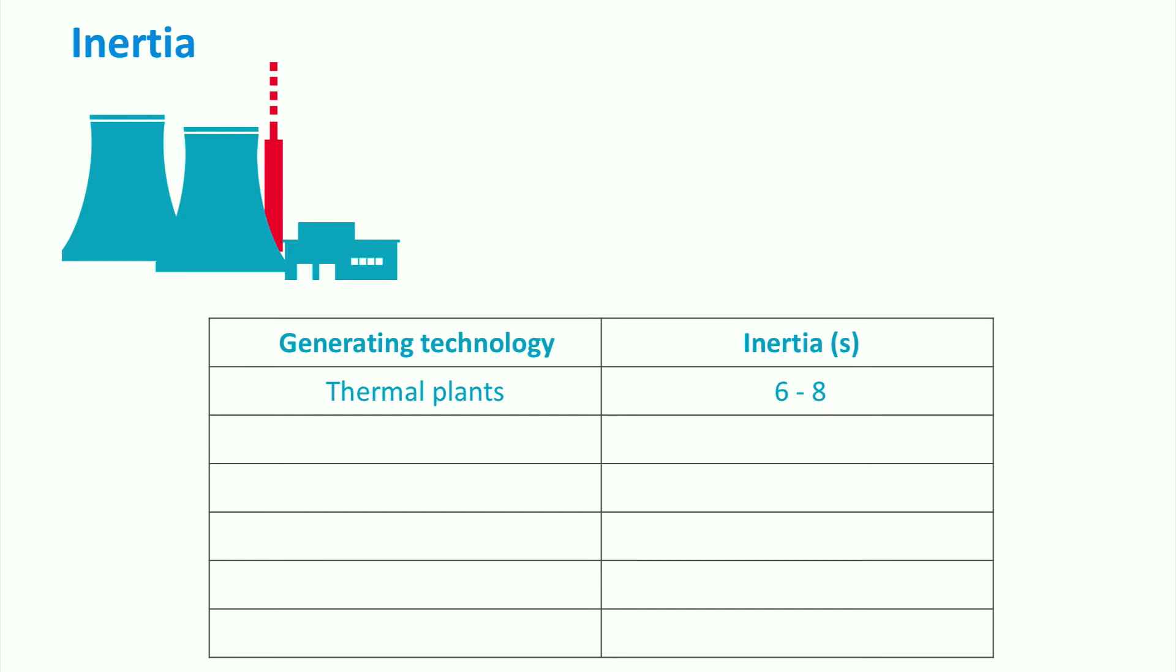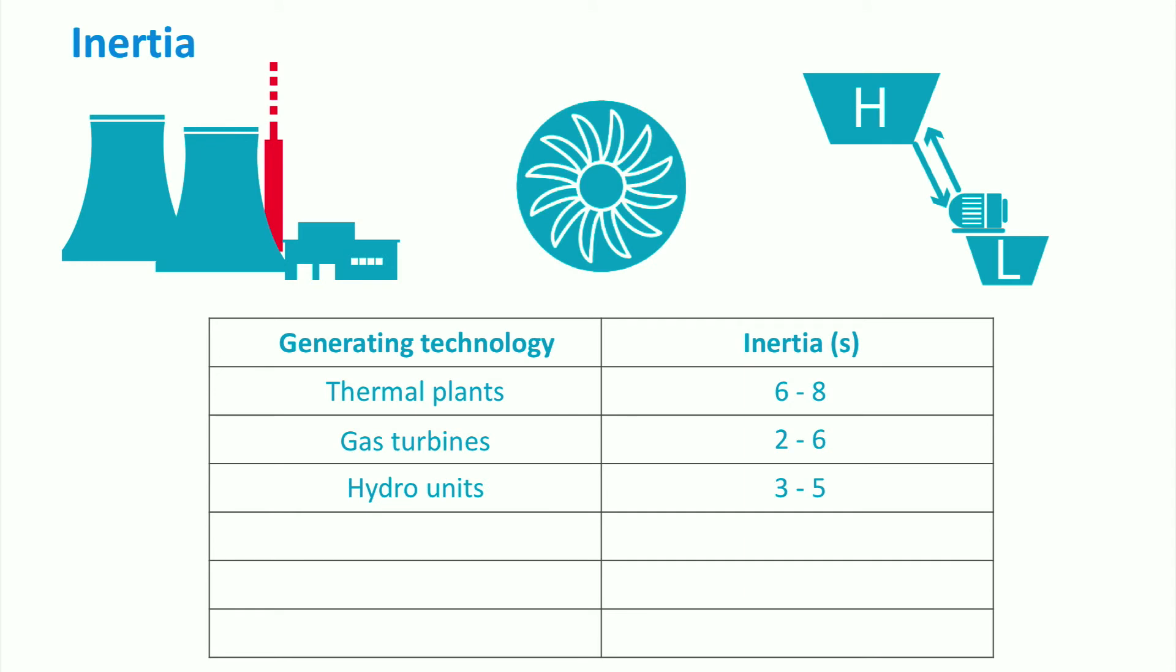Inherent inertial response is also provided by gas turbines and pumped hydro units, which provide inertia in a range between 2 and 3 seconds up to 5 or 6 seconds.